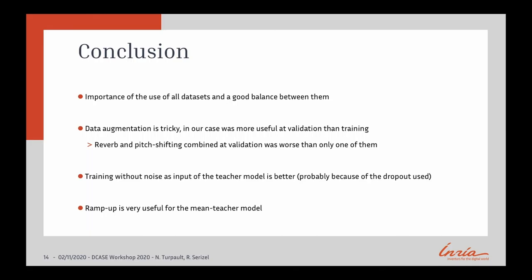To conclude, we've seen the importance of using all datasets with a good balance between them. Data augmentation is tricky — in our case it was more useful at validation time than training; reverb and pitch shifting combined at validation was worse than using only one of them. Training without noise as input to the teacher model is better, probably because of the dropout used. Ramp-up is very useful, especially on the learning rate, and is an important piece in the Mean Teacher model. Thank you for your attention — if you have any questions, don't hesitate to ask them in the chat.